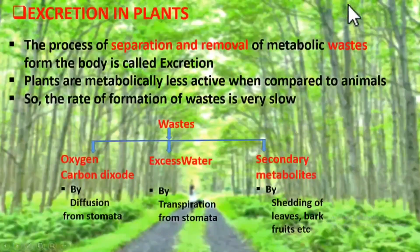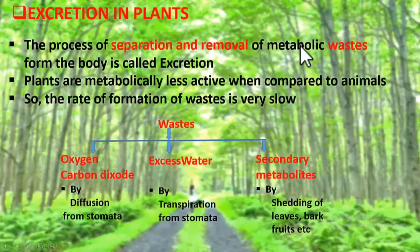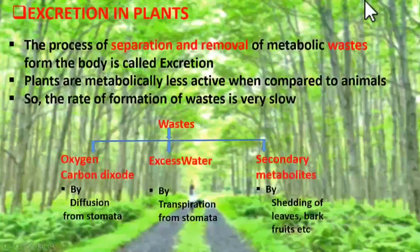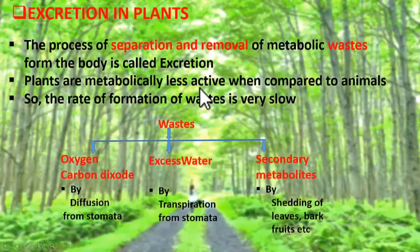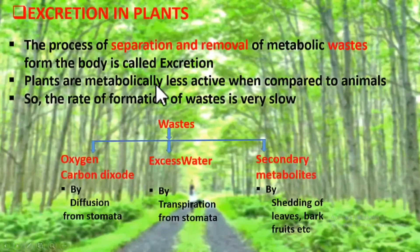The wastes are called metabolic wastes because they are the products produced during metabolic reactions. When compared to animals, plants are metabolically less active, which means that plants perform metabolic reactions at a slower rate because plants don't require as much energy as animals need.